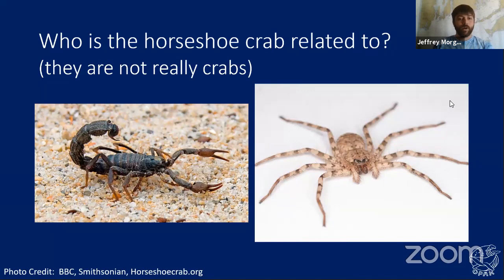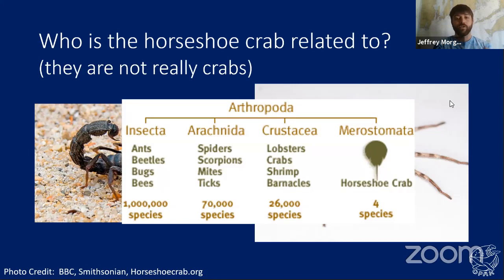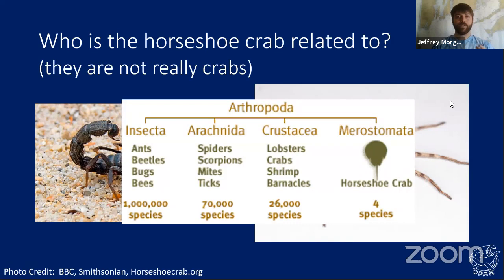Because they're arthropods, horseshoe crabs molt their shells. The example I like to show is that if you walk up to a blue crab or green crab, it usually retreats backwards to stay defensive. Horseshoe crabs move forward, which we'll get into as they molt. Again, horseshoe crabs are not crabs, even though I'm probably going to call them crabs throughout this entire presentation, because that is their name.